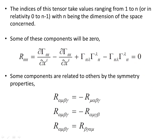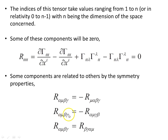Some components are related to others by the symmetry properties, which were derived in a previous video. In the first two indices alpha and mu, when those first two indices are reversed to mu alpha, that component becomes negative. Similarly, if we reverse the order of the last two indices gamma and beta, it also makes that component negative. If we swap the first pair of indices with the second pair of indices, there is no change in sign.